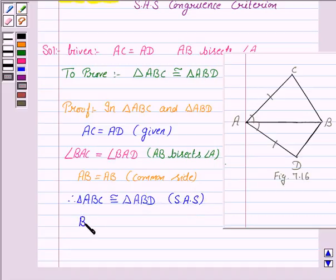BC is equal to BD by CPCTC. That is, corresponding parts of congruent triangles are congruent. Hence, the result is proved.